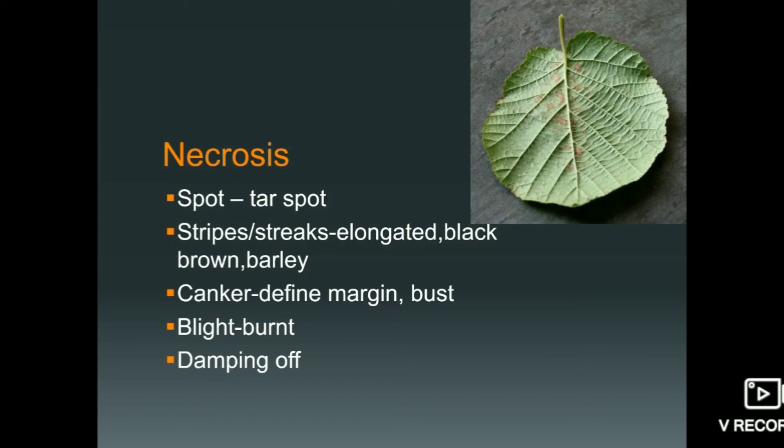Spots appear in various types — brown spots, yellow spots, and black spots. Black spots appear at a very late stage. When cell death occurs and chlorophyll is destroyed, black spots appear. When you see black spots, they look like tar spots. Tar is black, so if you see black spots, they resemble tar spots. This is one type of necrosis.